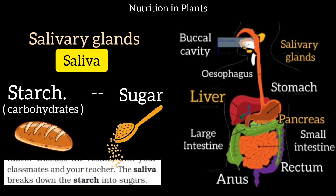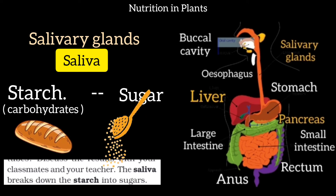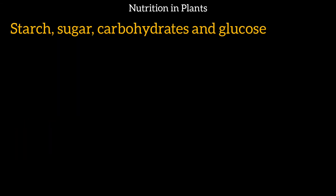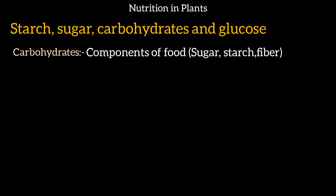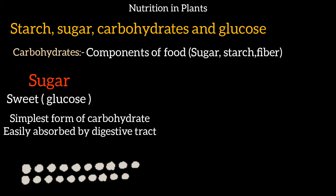Now, what is starch, sugar, and carbohydrate? Carbohydrates have many components: there is sugar, starch, and fibre. Sugar is sweet — we call it glucose — and it is a simple form of carbohydrate.